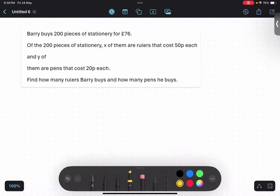So in these kind of questions, we have to frame equations. Berry buys 200 pieces of stationery for this much amount.